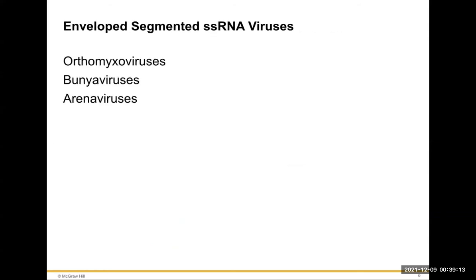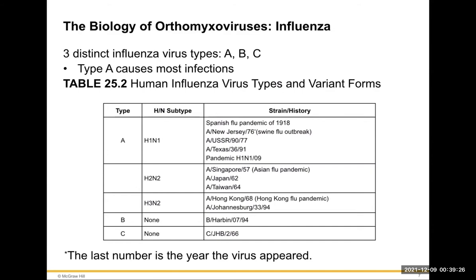Enveloped segmented single-stranded RNA viruses include the orthomyxoviruses, bunyaviruses, and arenaviruses. The orthomyxoviruses have three distinct influenza types. Influenza is the common flu — that's our flu vaccine. The flu vaccine is different from the coronavirus vaccine; just because you have the corona vaccine doesn't mean you shouldn't get the flu vaccine. They address different viruses. The CDC looks at 20 different strains likely to cause influenza that season.